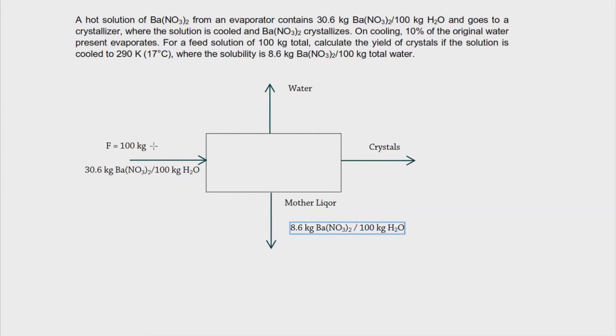And then it starts with the feed, which is actually hot. And then it is cooled to 290 Kelvin, which is 17 degrees Celsius. So basically what we have here is that the mother liquor is saturated at that condition.